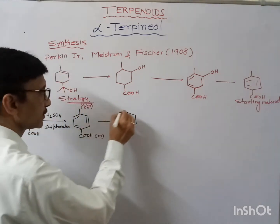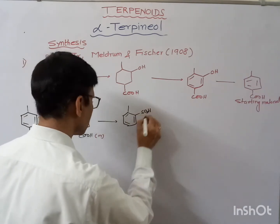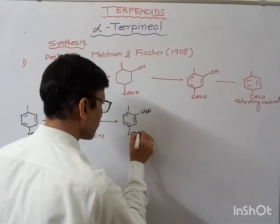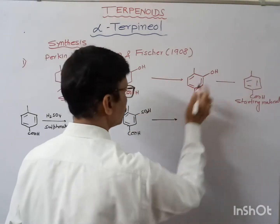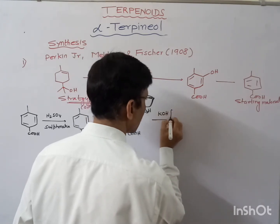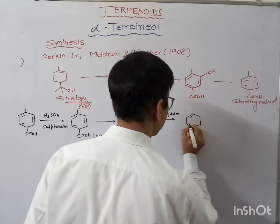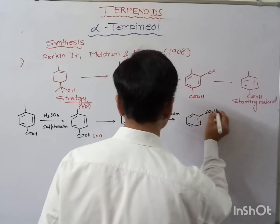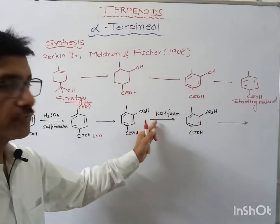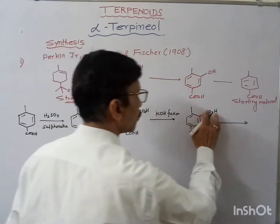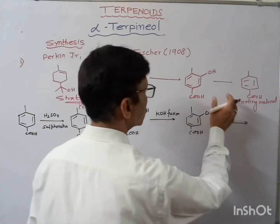Following this directing effect, we can get the SO3H group at that position. Now finally this SO3H group can be converted into the OH group by KOH fusion — by KOH fusion we can bring the OH group.